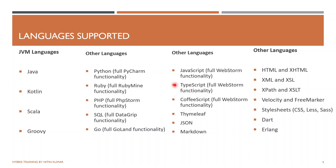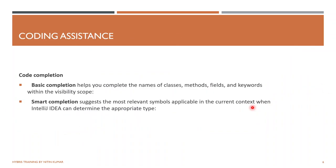These are the same slides I have shown in the previous video, just covering briefly. The languages supported by IntelliJ are Java, Kotlin, Scala, Groovy, and more. We use IntelliJ because it provides coding assistance — basic completion and smart completion. Basic completion provides names, classes, methods, fields, keywords etc. Smart completion shows suggestions based on the context of a particular file, giving the most relevant suggestions rather than random ones like Eclipse does.